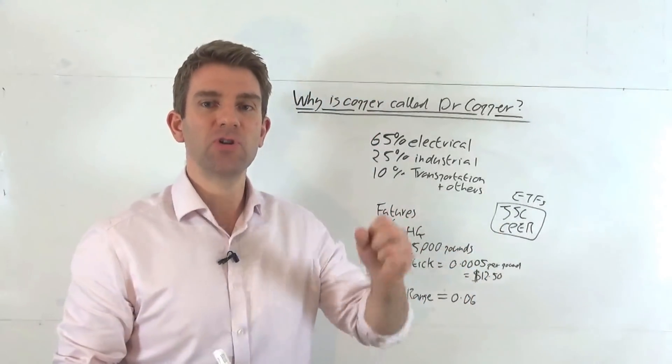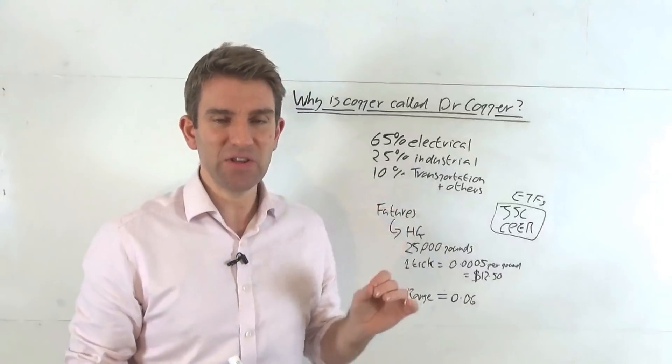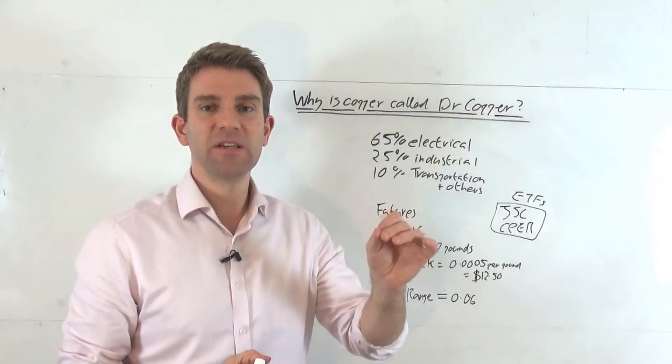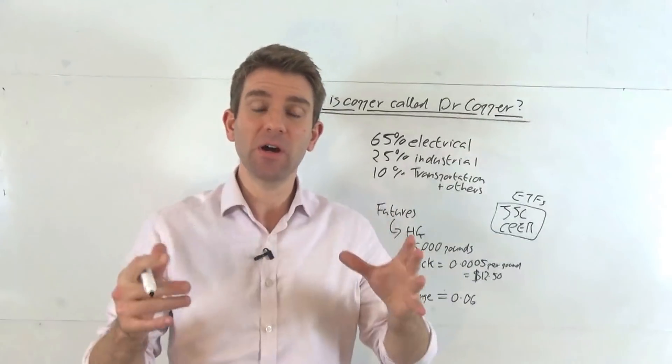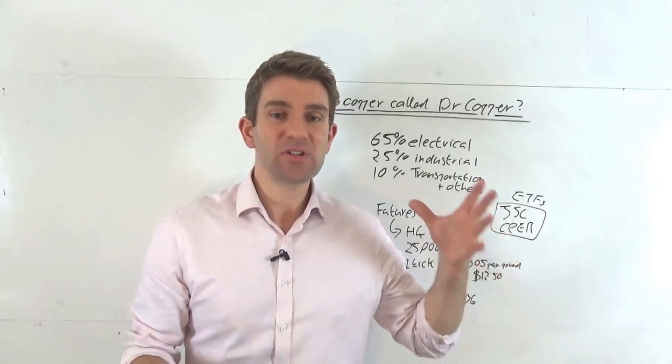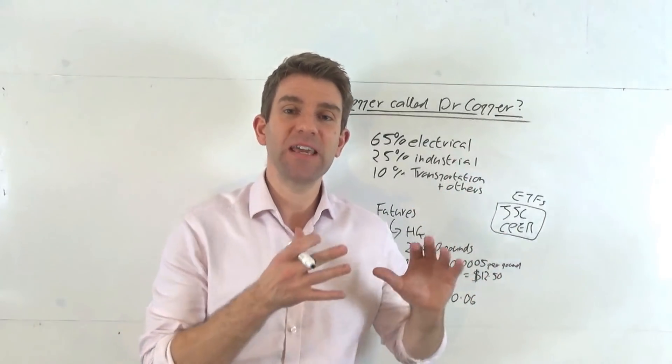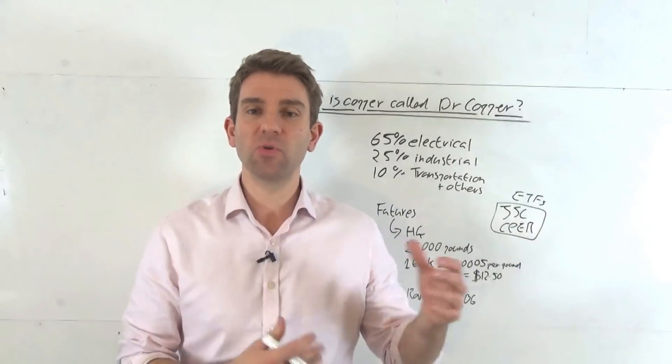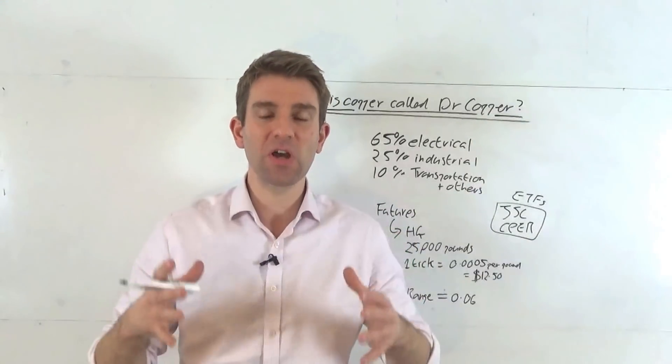Whereas copper is very much a metal that is used in industry, in electrical industry, in multiple businesses. This is why it's called Dr. Copper, because generally speaking, it's been said that it's got a PhD in economics because it can tell when the economy is booming or about to bust or about to turn. It can spot the cycles in the economy.